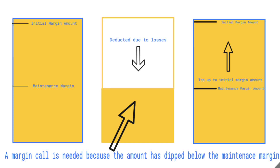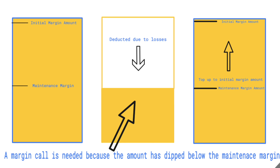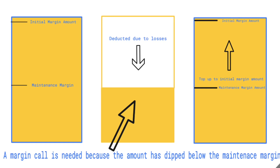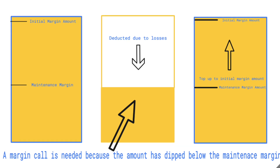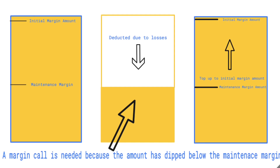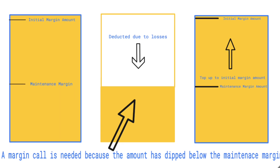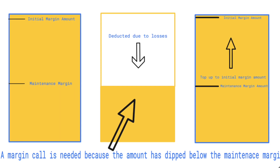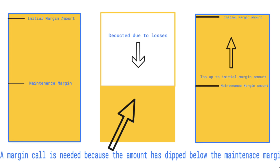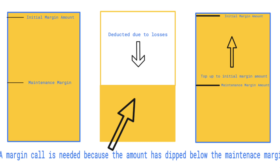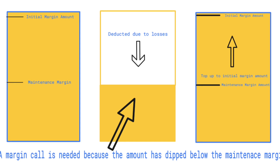By trading on margin, a trader can make significant gains as well as significant losses. For example, a trader might have a £10,000 broker account but be in a trade for a £100,000 position in crude oil. If the price of oil moves against their trade, they will incur losses which far exceed the initial £10,000, meaning the broker would have to make a margin call requiring additional funds to be deposited to cover market losses.